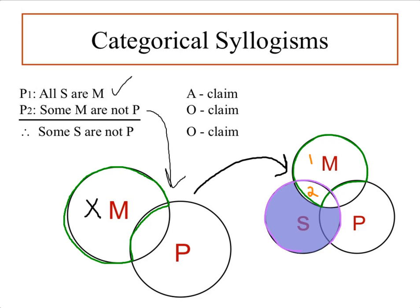We can't make any commitments about whether M is inside the S category or not. If we were to put the X in one region, we'd be saying some M are not P, but we'd also be saying some M are not S — and we can't do that. That would be diagramming something that doesn't exist in the argument. And if we put it in region 2, we'd be saying some M are not P, but also some M are S, or some S are M — they're logically equivalent — and we can't do that either. That would be diagramming something not stated in the argument; it's not part of the claim.